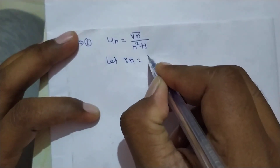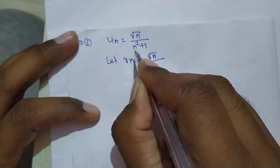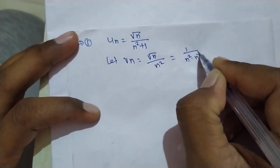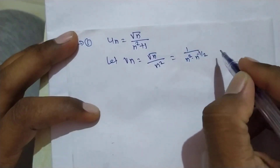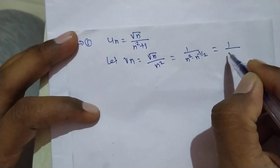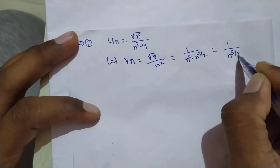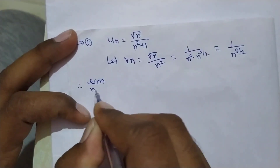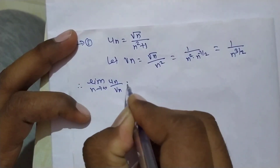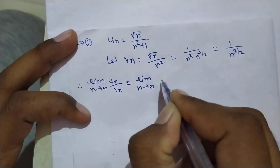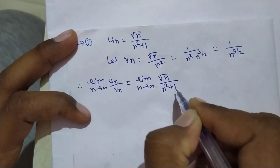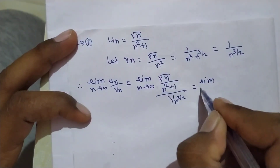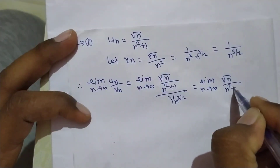To use the comparison test we need vn. Take the maximum power of n common from numerator and denominator. The numerator is √n and the denominator's highest power term is n², so vn = √n / n² = n^(1/2) / n² = 1/n^(3/2). So series vn is 1/n^(3/2). Now we find the limit of un/vn.